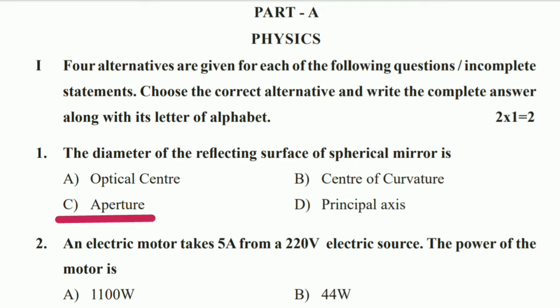First section is MCQs. Question one: the diameter of the reflecting surface of a spherical mirror is called the aperture. The answer is option C: aperture.